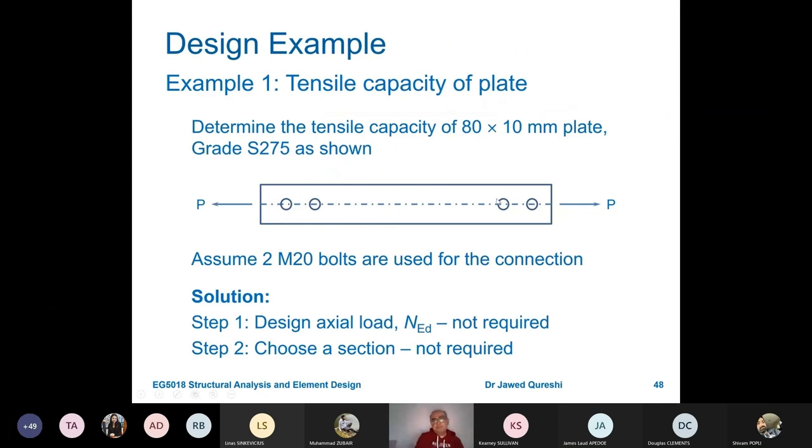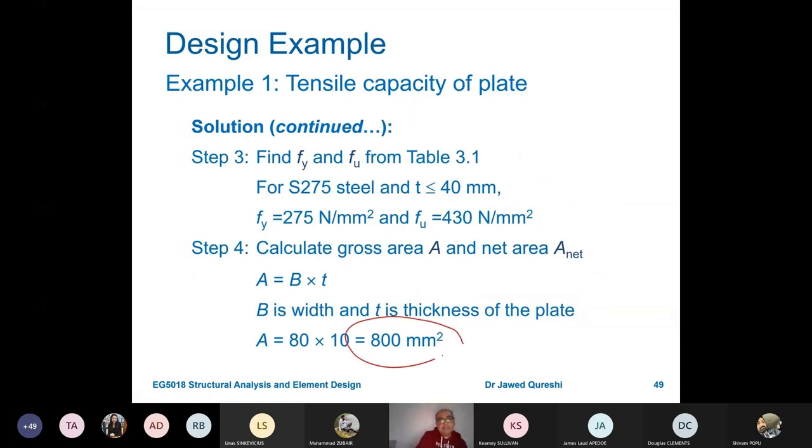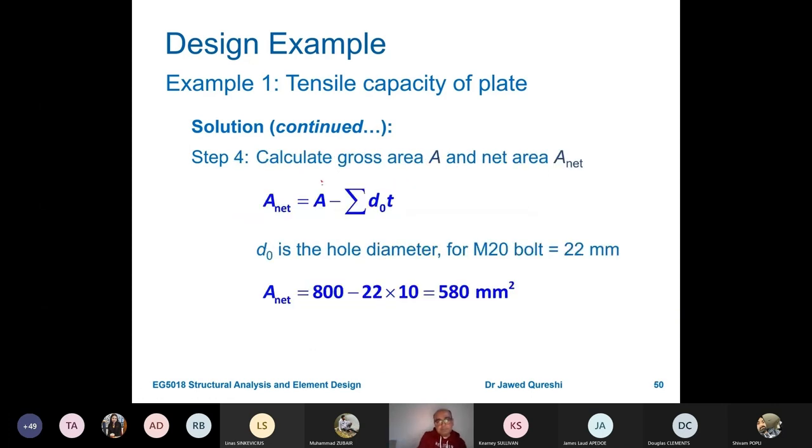Now in this example, this is a similar example. We have an 80 by 10 plate, S275. It's the same example, only difference is that previously we did not consider holes. Two M20 bolts are considered. But now as the bolts are in line, it is going to fail only at one part. So summation of holes will be only one times D0. This is M20, so D0 is going to be 2 millimeters higher than that, so D0 will be 22 millimeters. Area is 800 millimeters. Fy and Fu we determined from Table 3.1. We will need Fu. Anet is equal to gross minus D0t, because these are in series, so only one hole is going to fail.